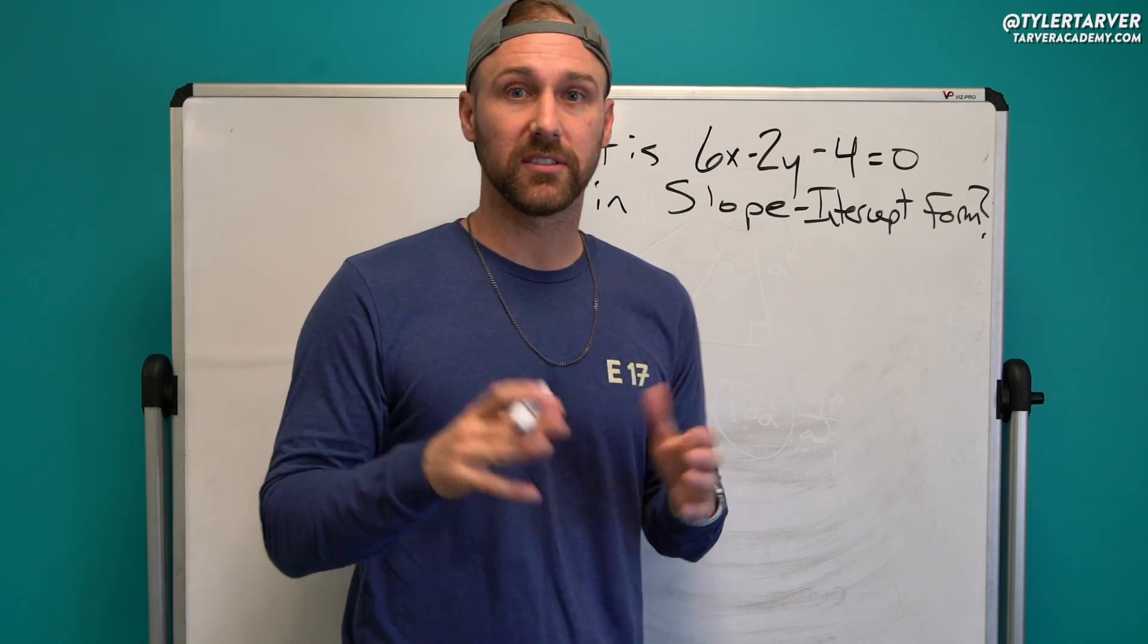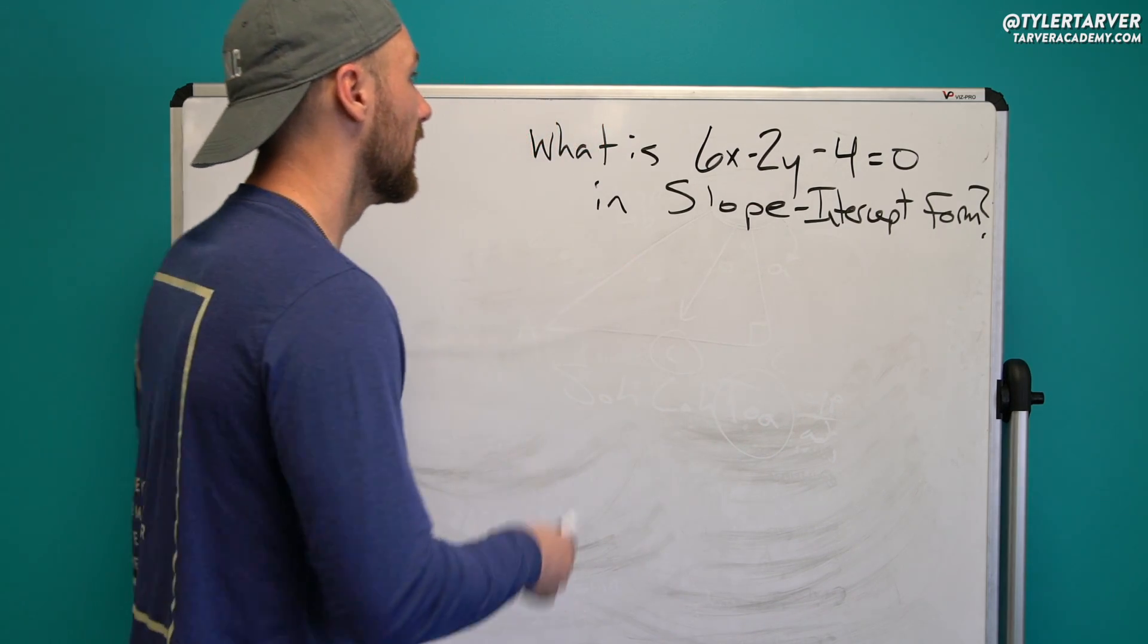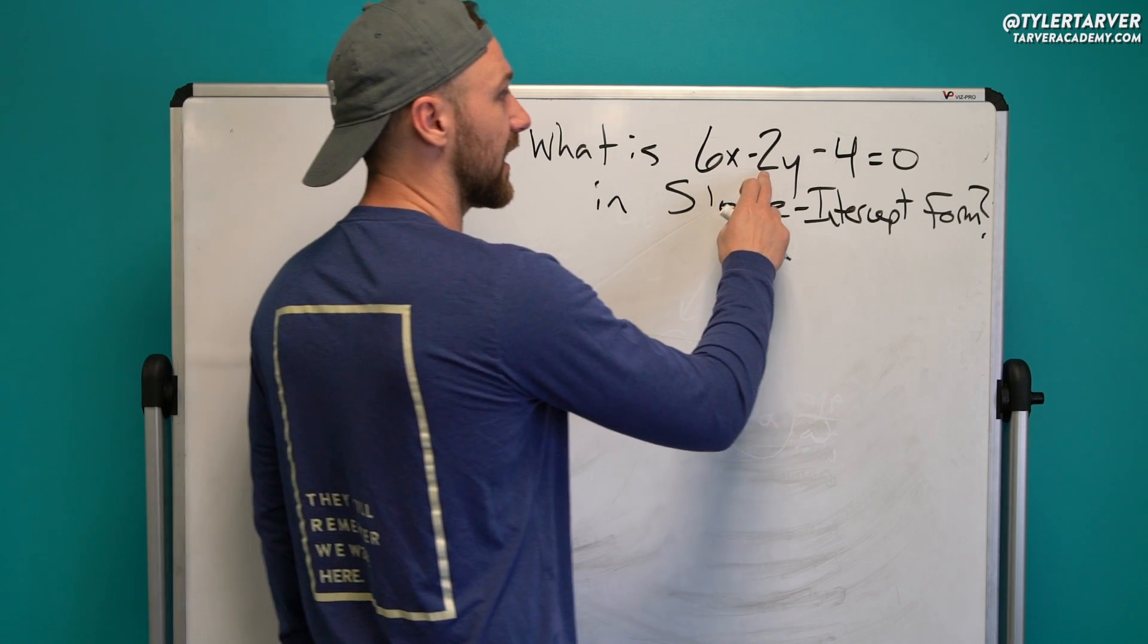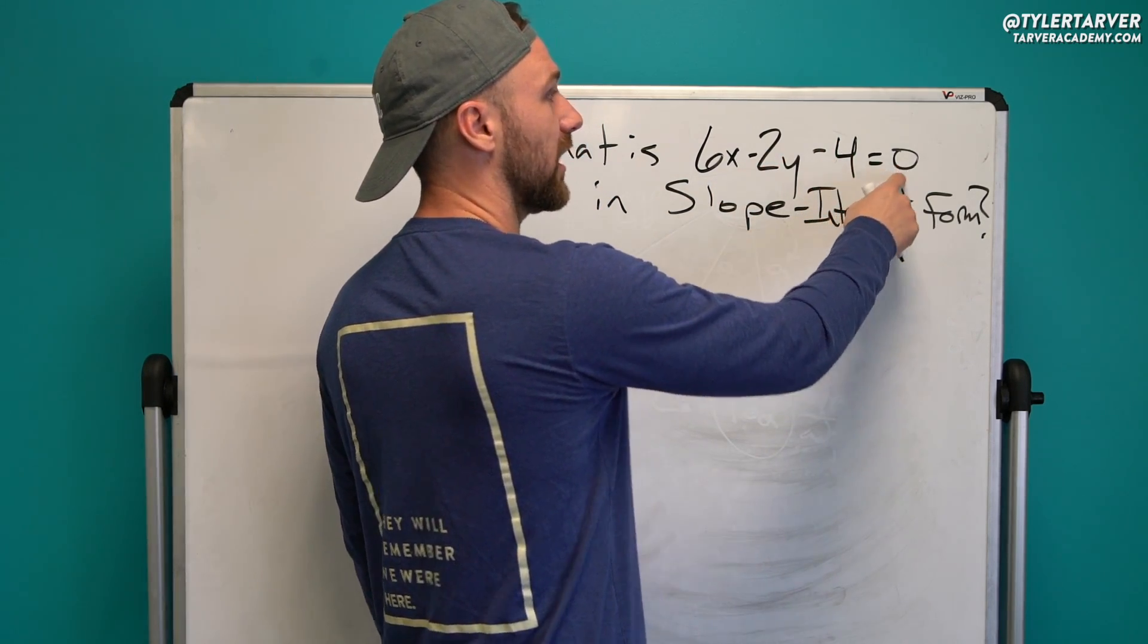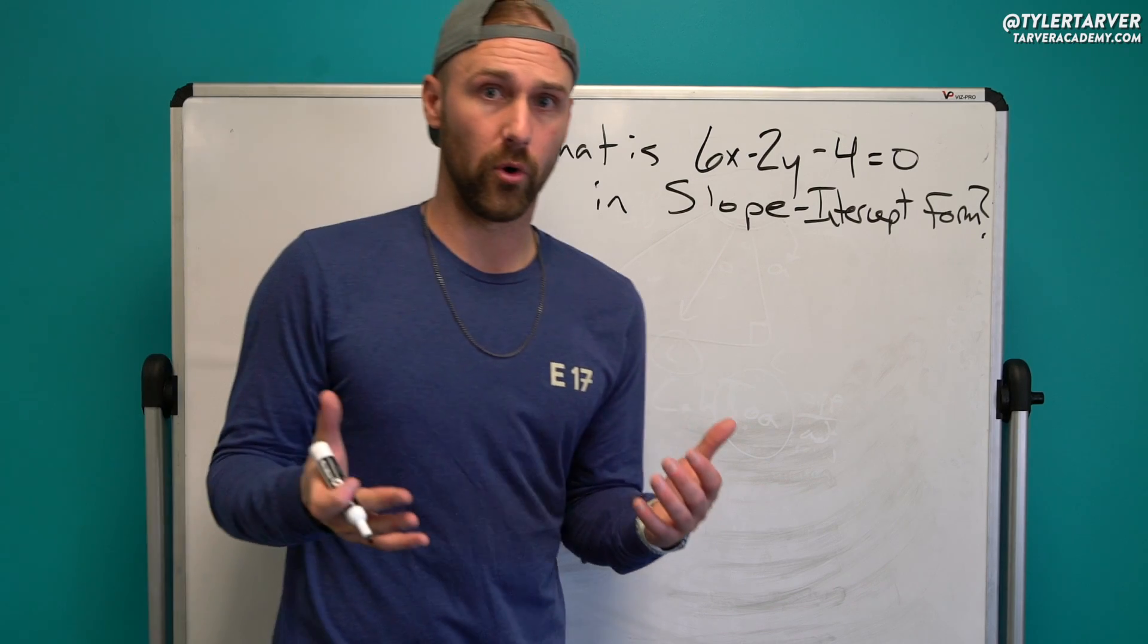And now you've unpaused. Oh wow, that was a great effort. Let's see if you got it right. Okay, so it says what is 6x minus 2y minus 4 equals 0 in slope-intercept form?